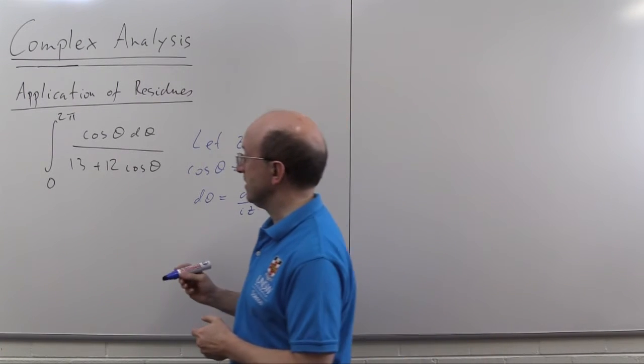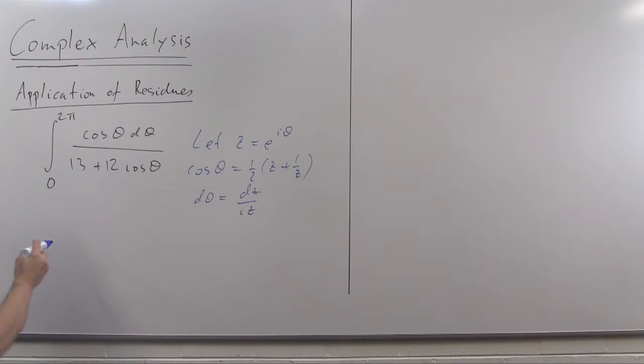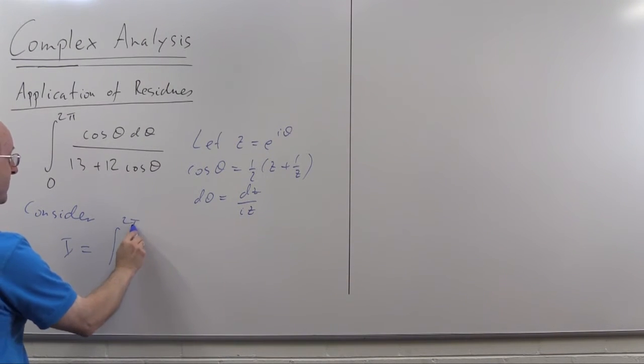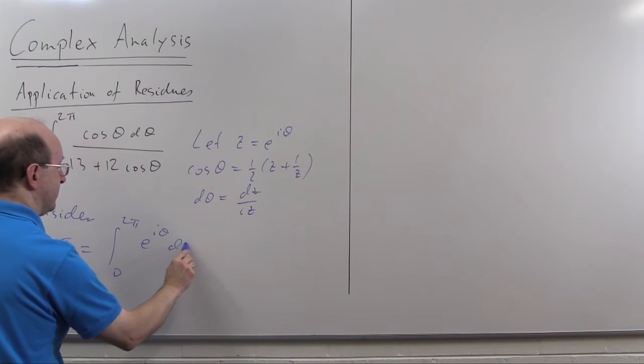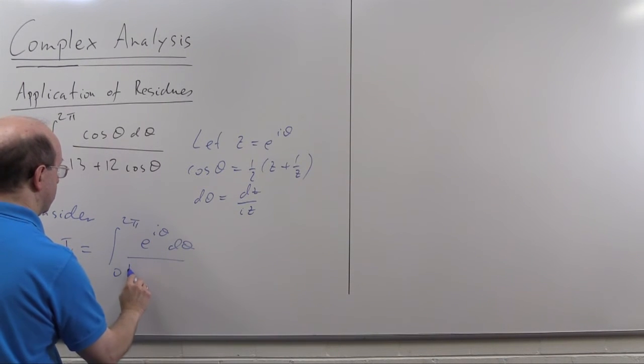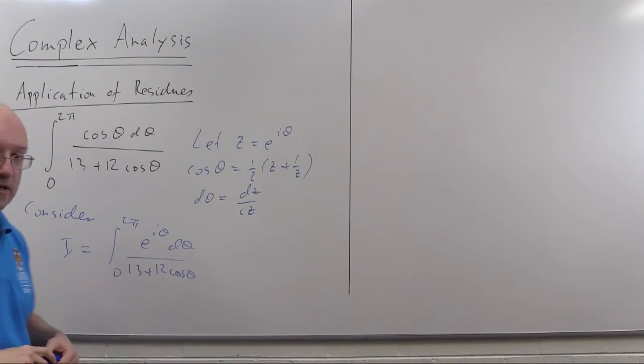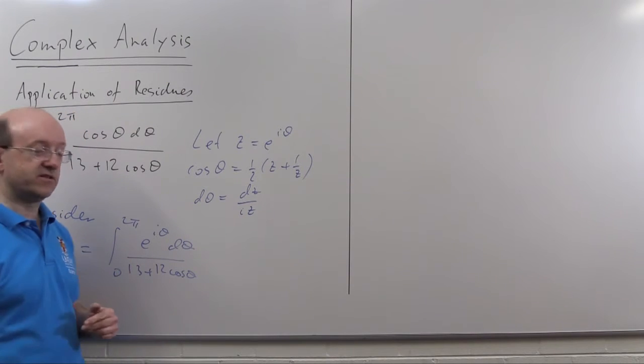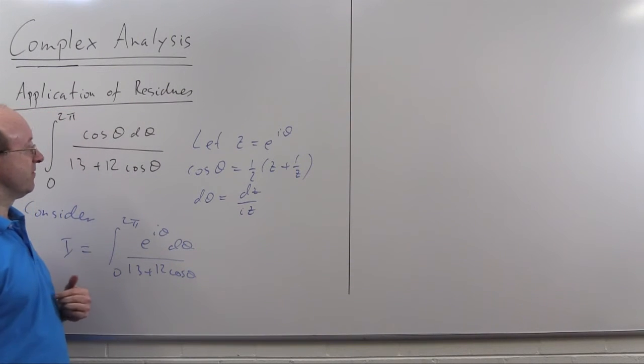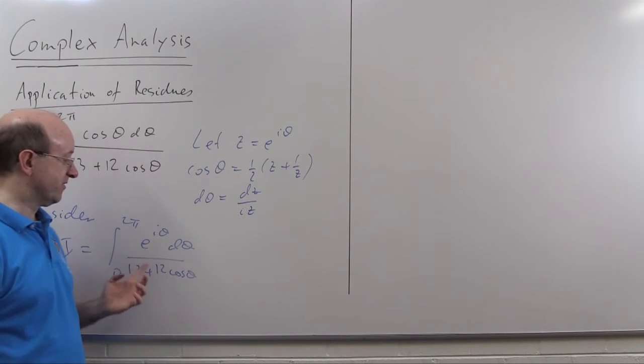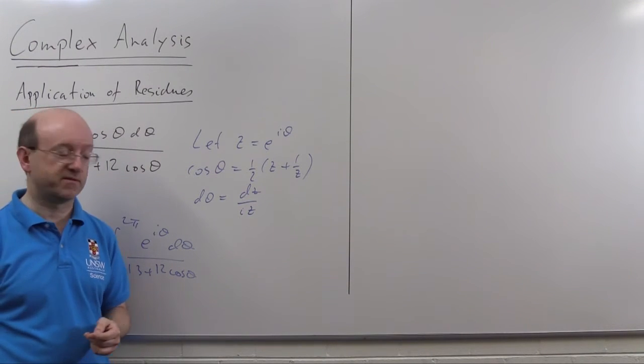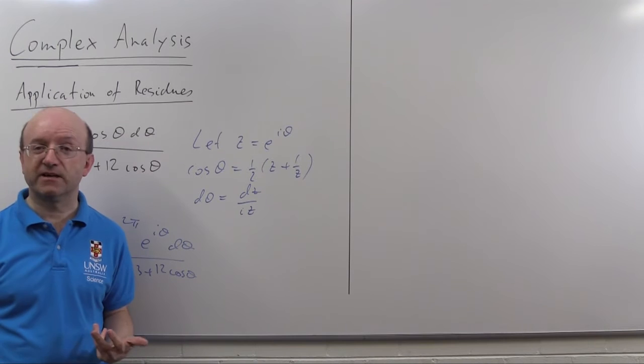So what we're going to look at instead of this particular example is we're going to consider an integral I'll call capital I, the integral from zero to two pi e to the i theta d theta over 13 plus 12 cos theta. And then we'll take the real part of this at the end, and that will give us the cosine one, and as an added bonus we'll actually be able to look at sine theta over 13 plus 12 cos theta, and we'll find that one from the imaginary part.